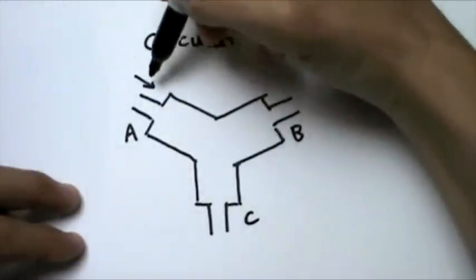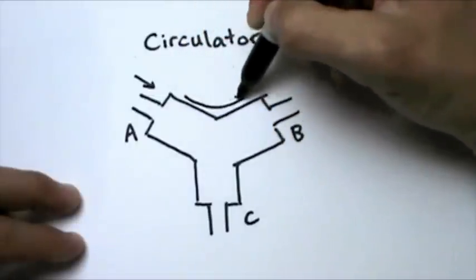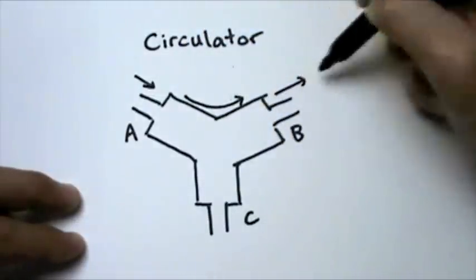If we send a signal down into A, it will come into here and it will be deflected up and come out of B.